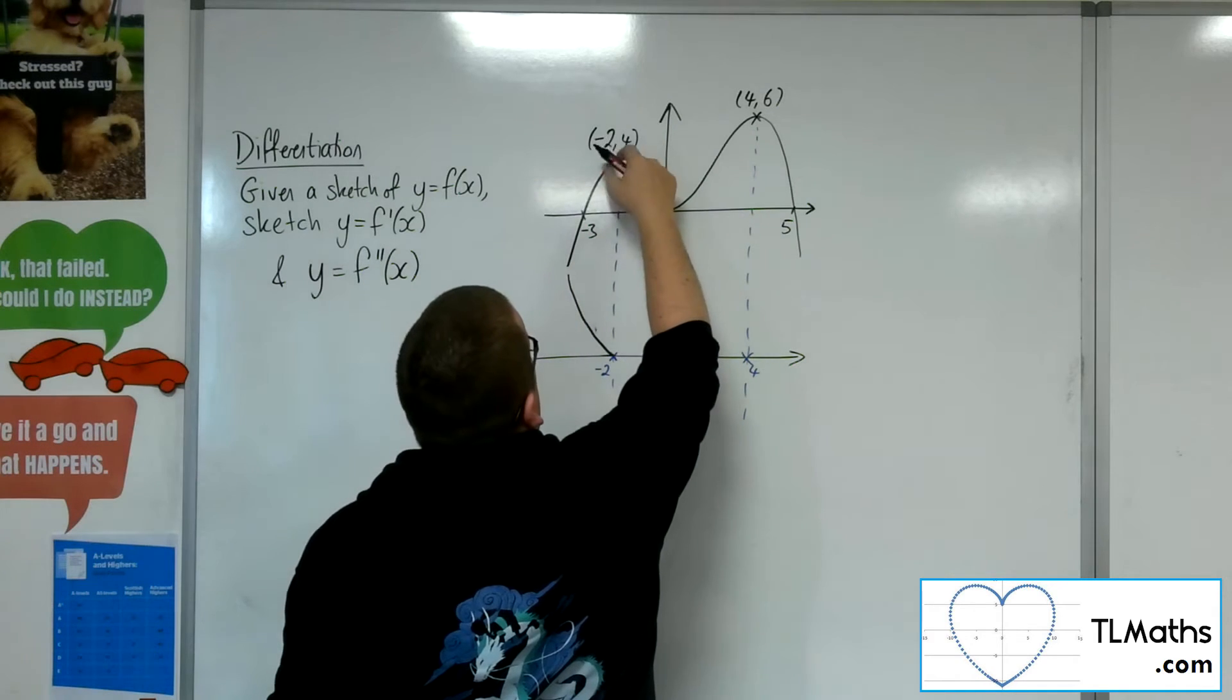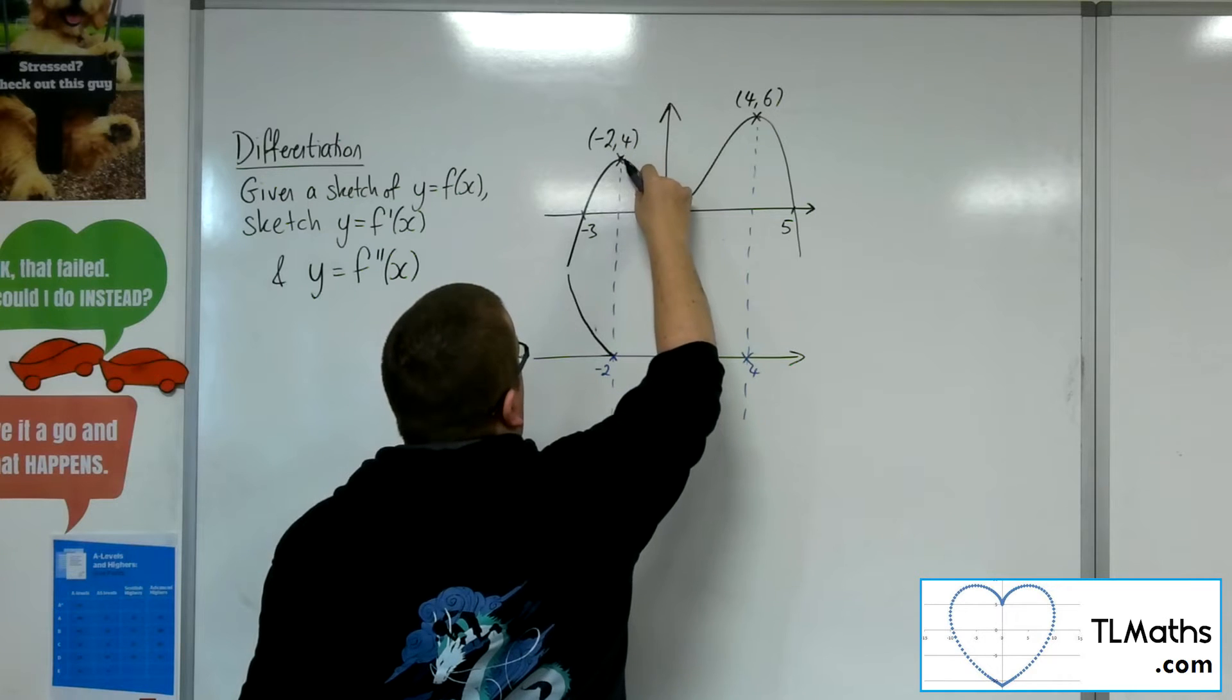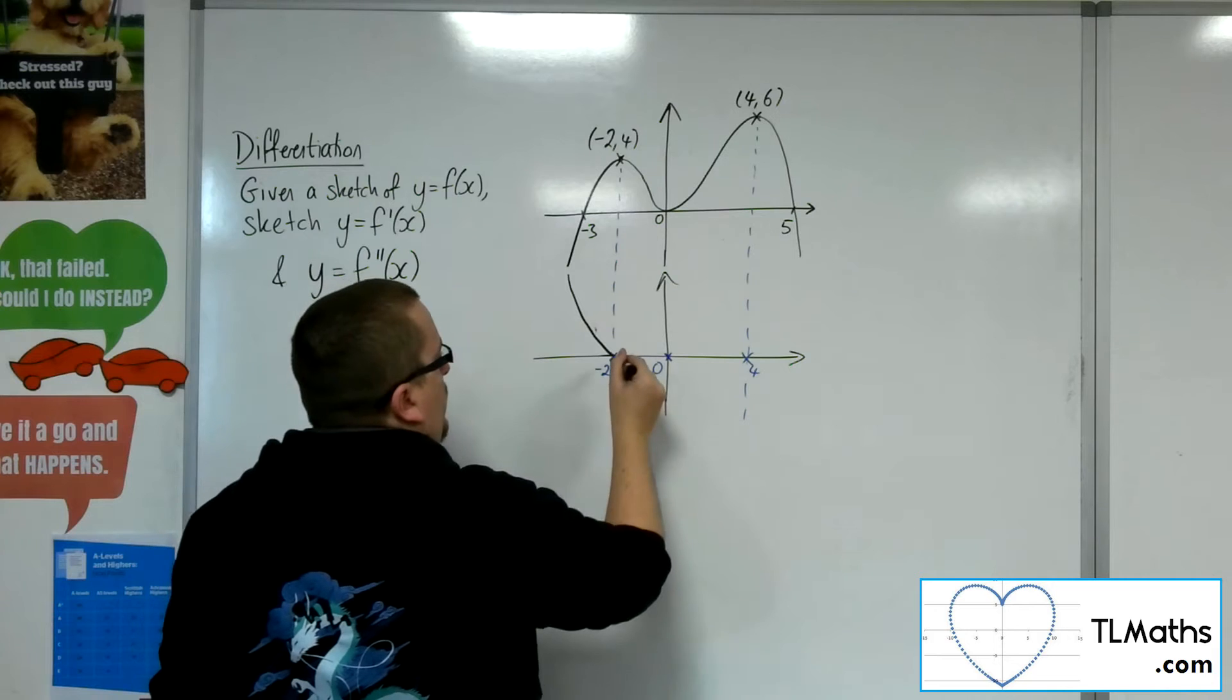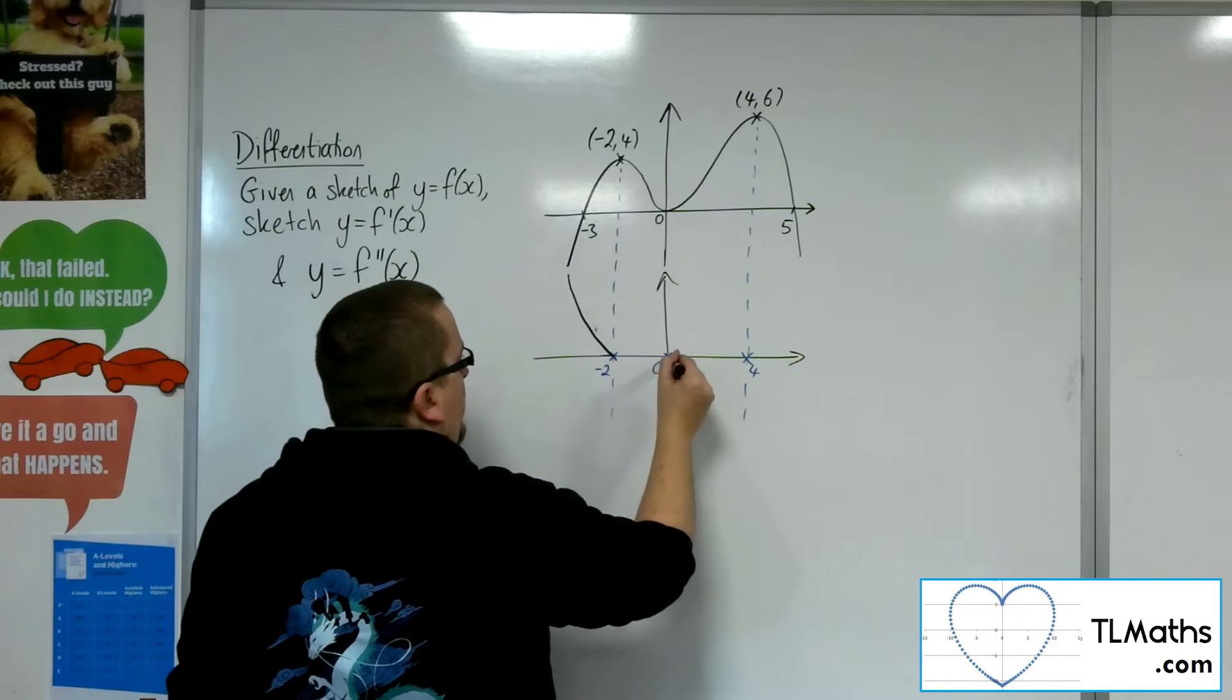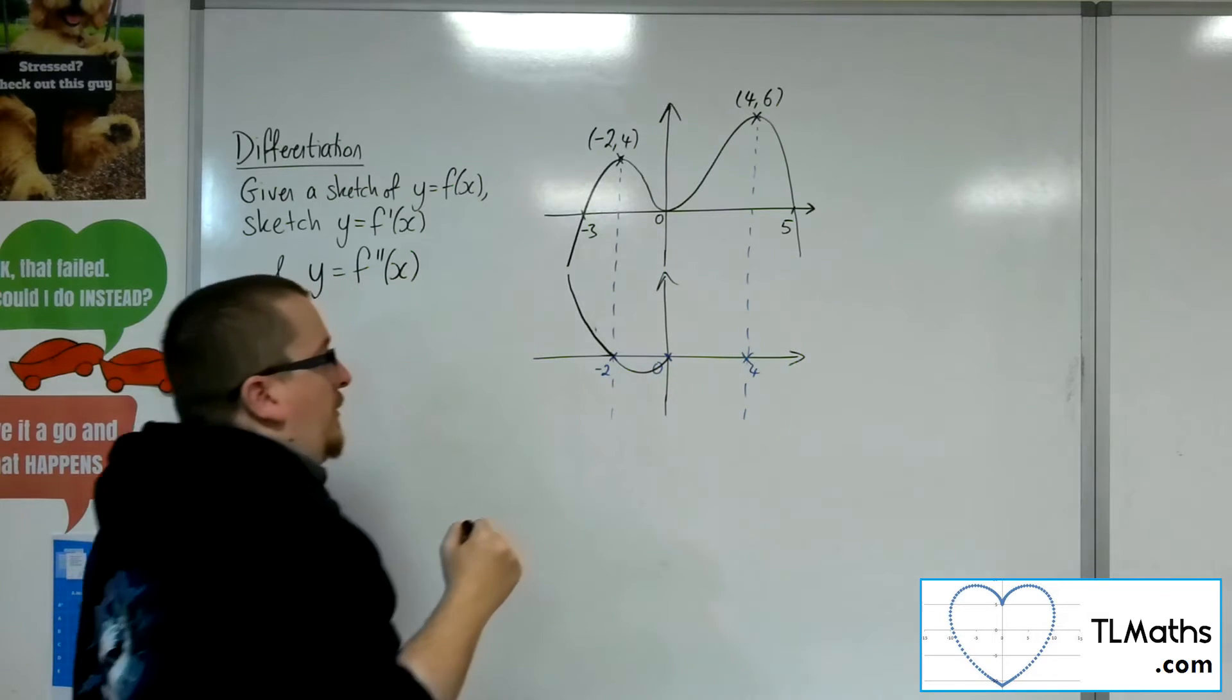Then we go into negative, because the gradient of the curve there is negative, and then it comes down and it slows down again and becomes zero. So between minus 2 and zero, it is negative. It's below the x-axis. We'll come back around like so.